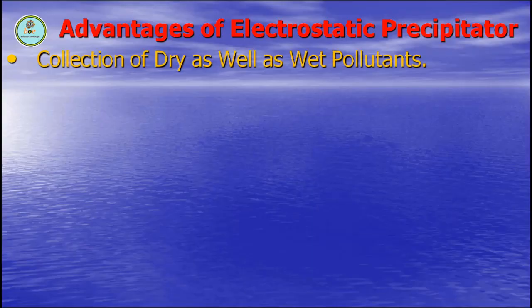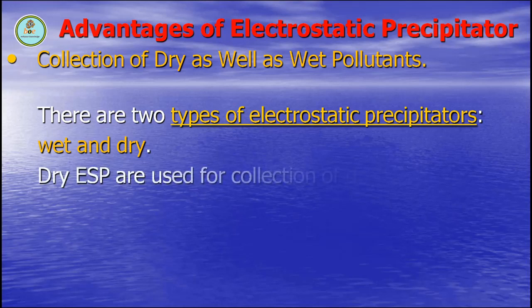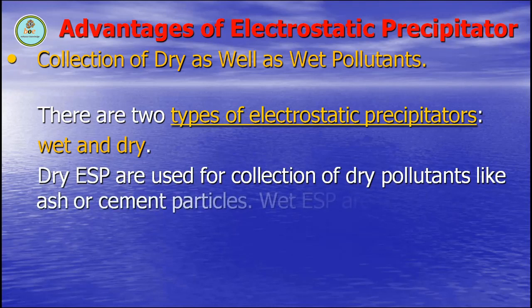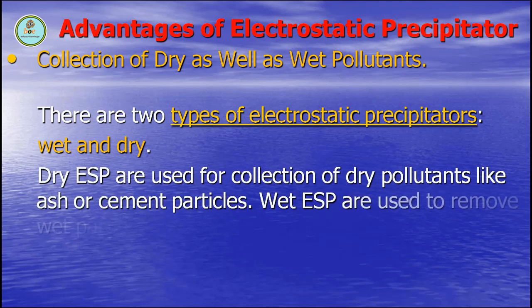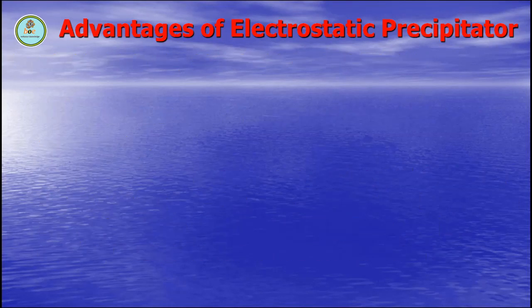Another advantage is the collection of dry as well as wet pollutants. There are two types of electrostatic precipitators: wet and dry. Dry ESPs are used for the collection of dry pollutants like ash or cement particles. Wet ESPs are used to remove wet particles such as resin, oil, paint, tar, or acid — anything that is not dry in the conventional sense.